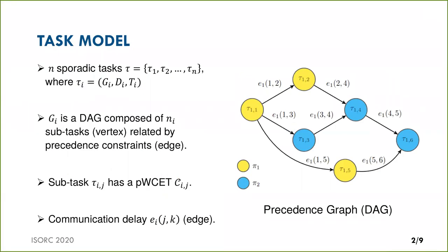We consider a task model composed of N sporadic tasks, where each task τ_i is characterized by a precedence graph G_i, deadline D_i, and minimum inter-arrival time T_i. G_i is a directed acyclic graph composed of n_i subtasks related by precedence constraints. Each subtask has a probabilistic worst-case execution time C_ij.